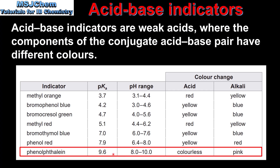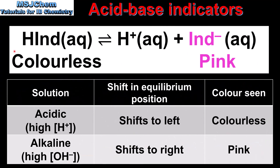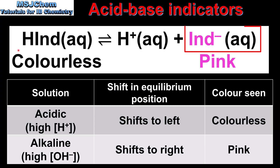So for phenolphthalein the pKa is 9.6 and the pH range is 8 to 10. Because Acid Base Indicators are weak acids, we can write equations that show their ionization. In this equation, HIND represents the weak acid, and IND- represents its conjugate base.